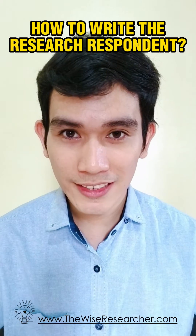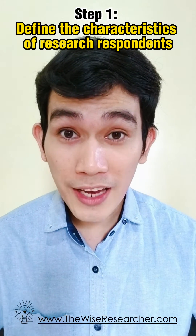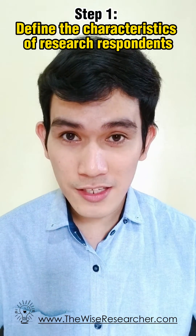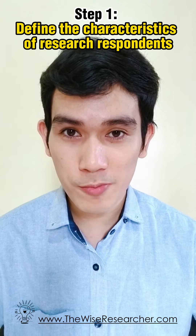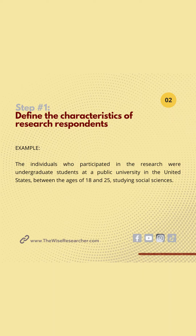Describe the research respondent. Step number one: define the characteristics of the research respondent. For example, the individuals who participated in the research were undergraduate students at a public university in the United States between the ages of 18 and 25, studying social sciences.